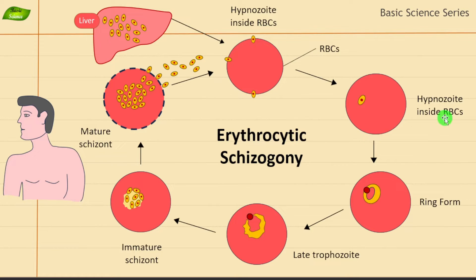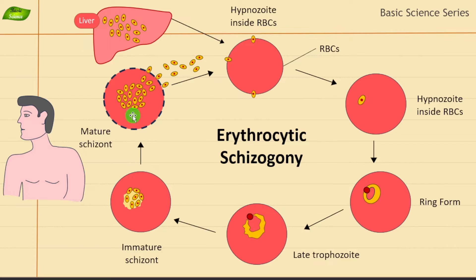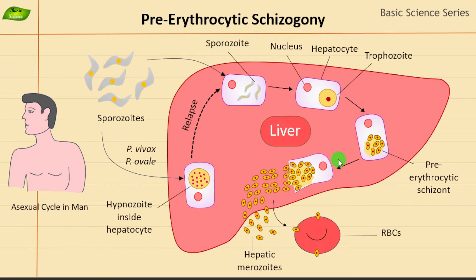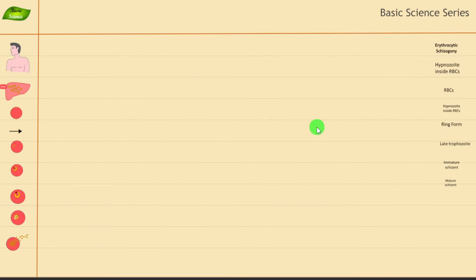RBCs are the red blood cells. We'll discuss all those stages one by one. We will create illustrations from individual components and explain erythrocytic schizogony in a simple way so that you can understand the different stages. So without any delay, let's start the video and jump to the slide where we create illustrations.